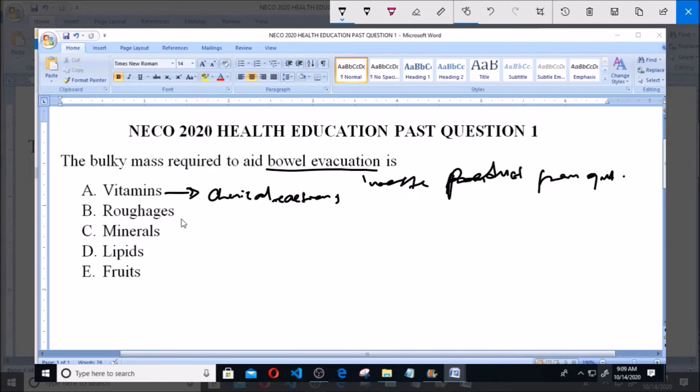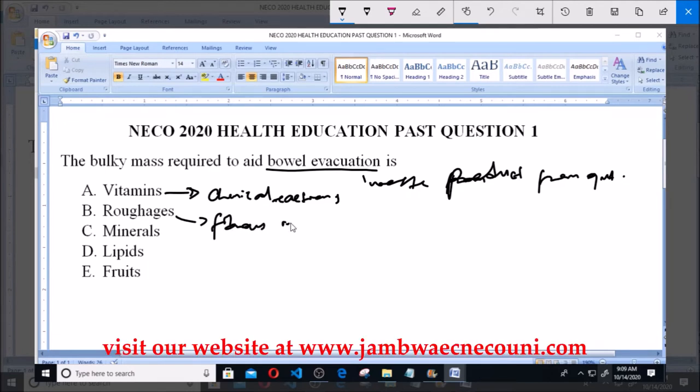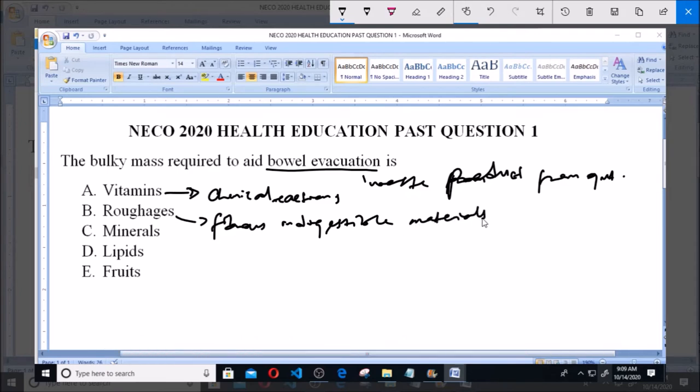Option B says roughages. Roughages are fibrous indigestible materials that are found in foodstuff and mostly in vegetables.